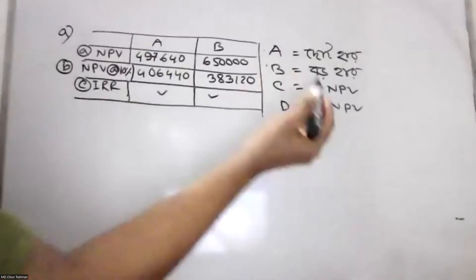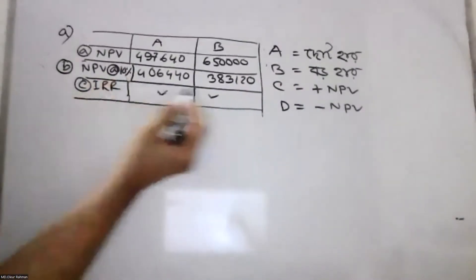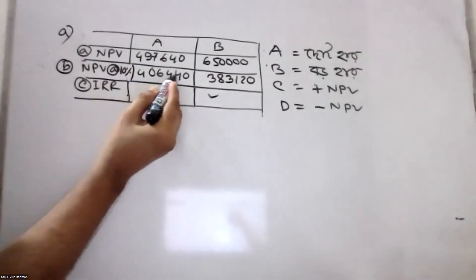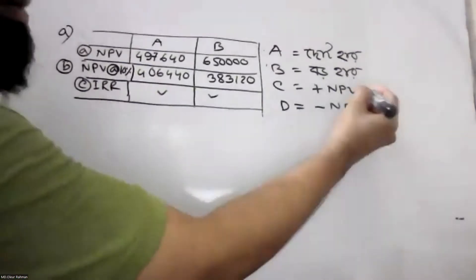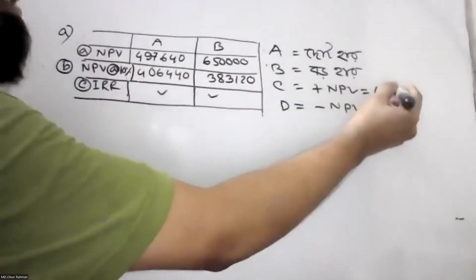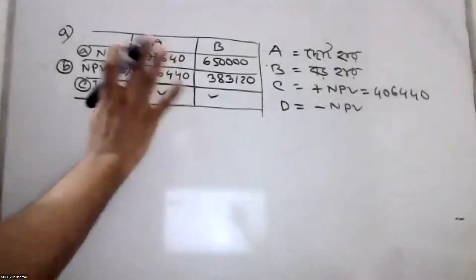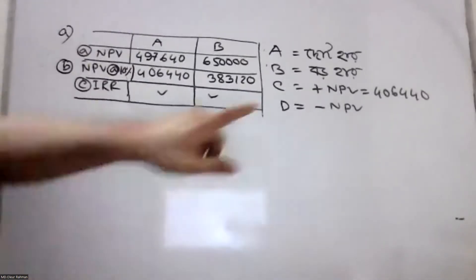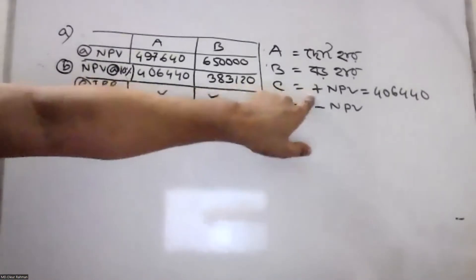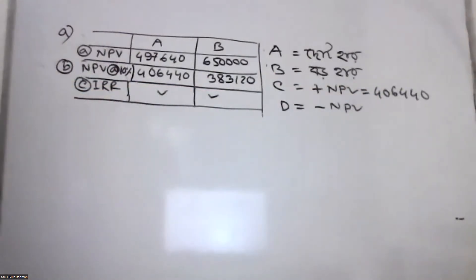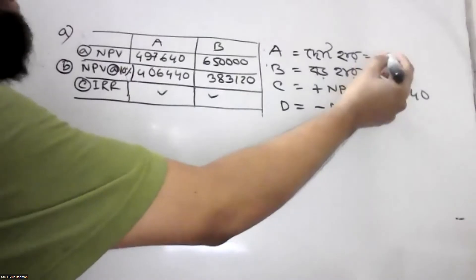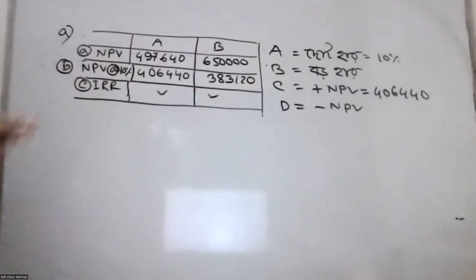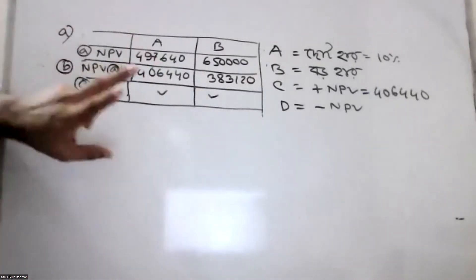So we have two NPV rates. Project A's NPV is positive. Positive NPV is applied. We will compute NPV. Negative rate is 10%. If we have one, we will have two NPV requirements. If we have two NPV requirements, the IRR would cover two NPV values.